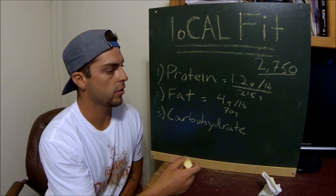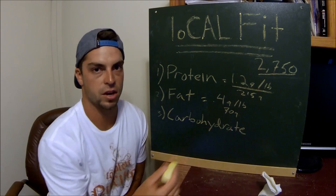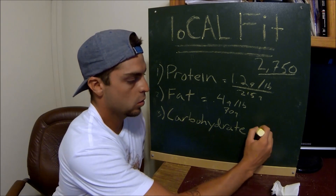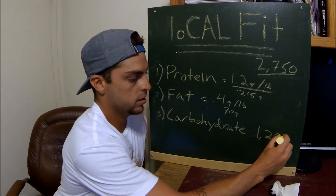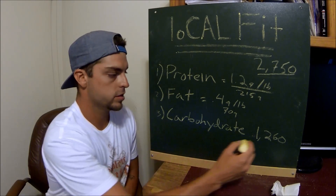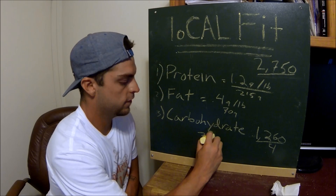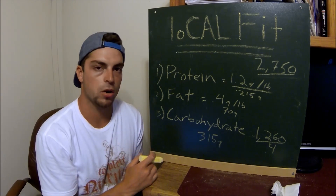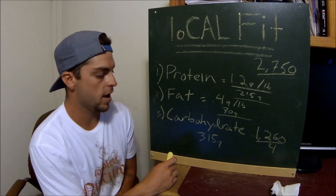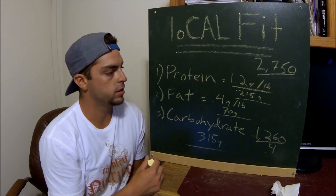So running the numbers: protein comes out to 215 grams per day, fat comes out to 70 grams per day. For carbohydrates, we take the remaining calories — 215g × 4 cal/g plus 70g × 9 cal/g subtracted from 2,750 — which leaves us with 1,260 calories of carbohydrates. Dividing by 4 gives us 315 grams of carbohydrates per day. So the macronutrient profile is 215g protein, 70g fat, and 315g carbohydrates.